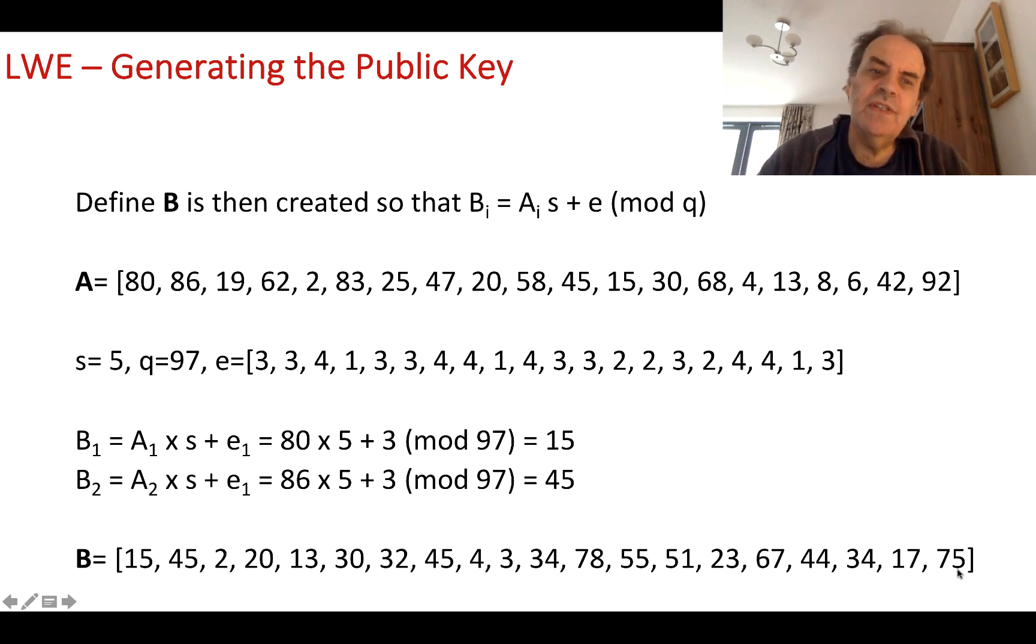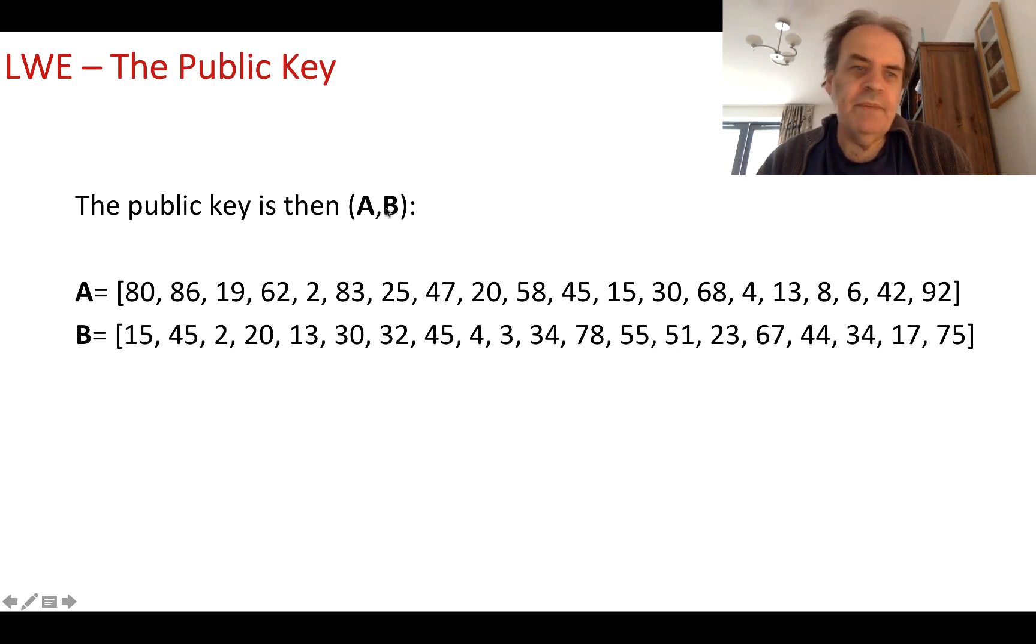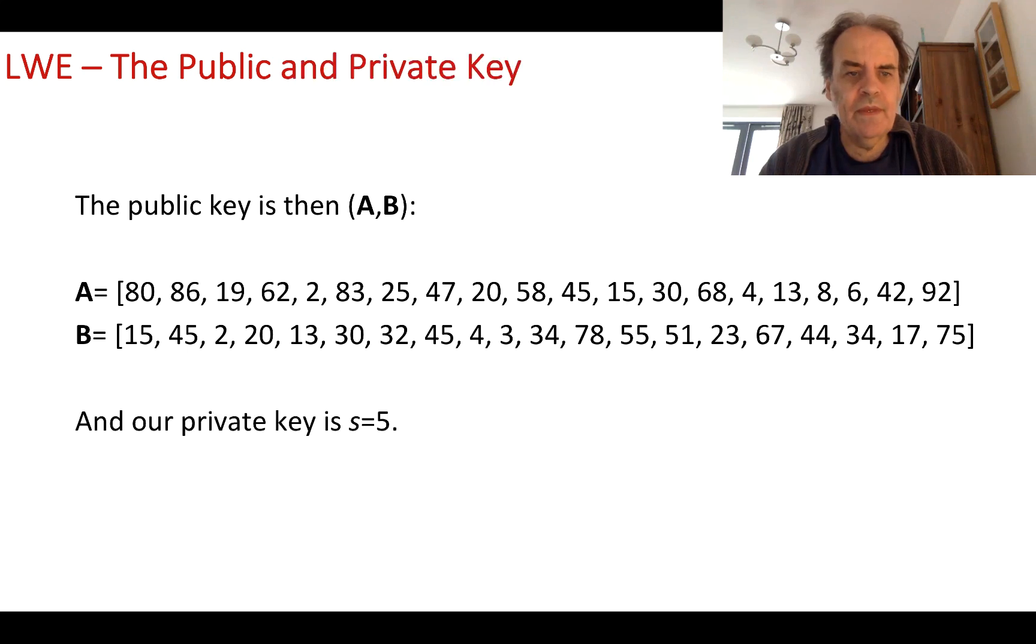This is a difficult problem to solve. It creates a lattice and these errors make it difficult to find out what the secret value S is. Our public key becomes A and B. We can publicize this, and anyone who wants to send us encrypted values will select values from A and B. Our private key is 5.